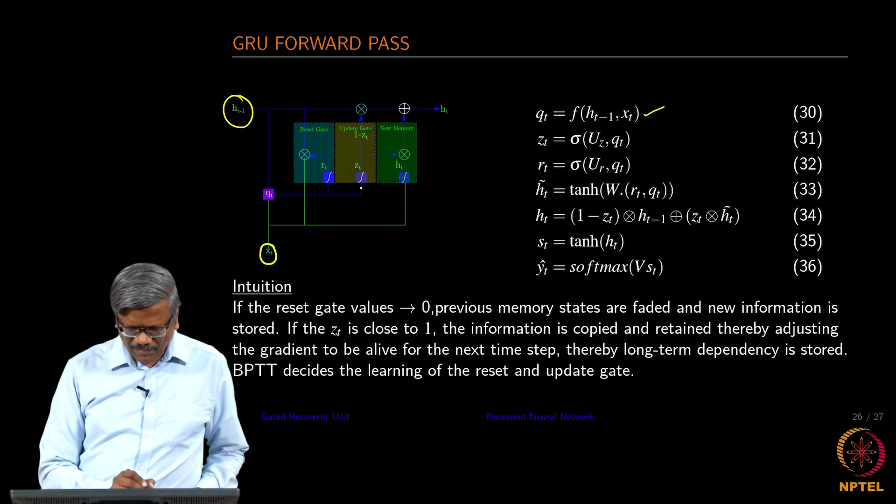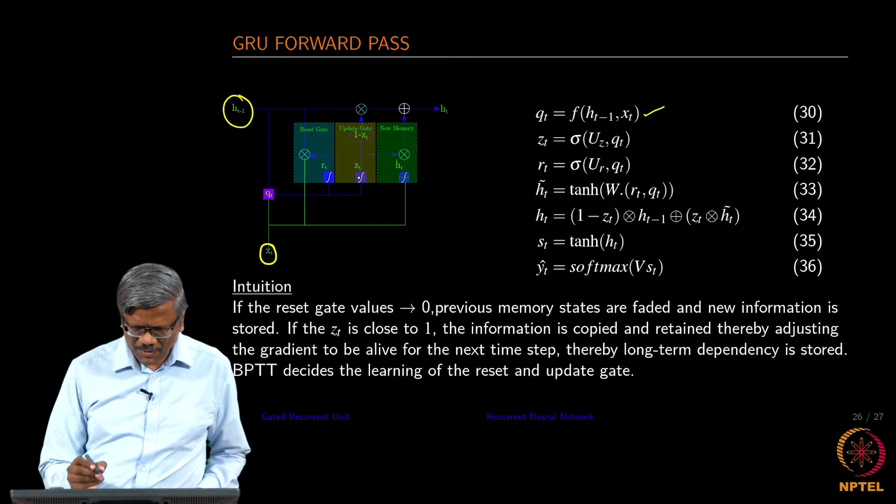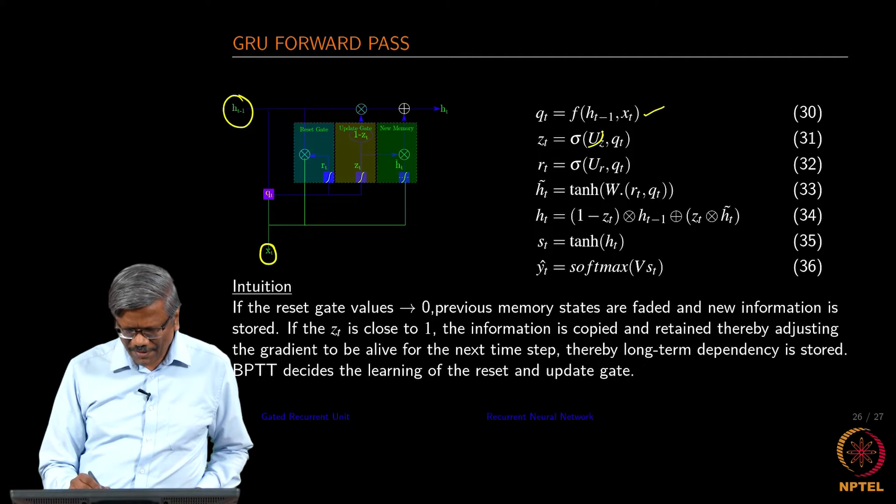And then we compute the update gate using a sigmoidal function and there is a weight that connects this. Since we are using the hidden layer, the weights are U.